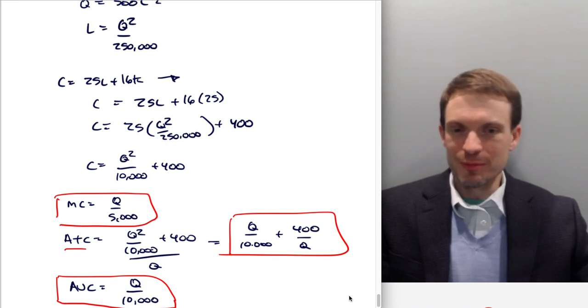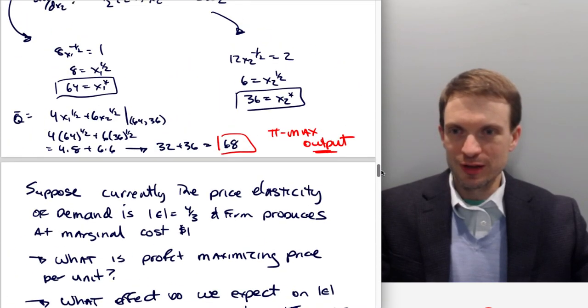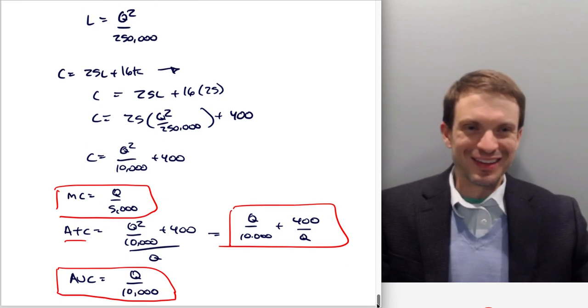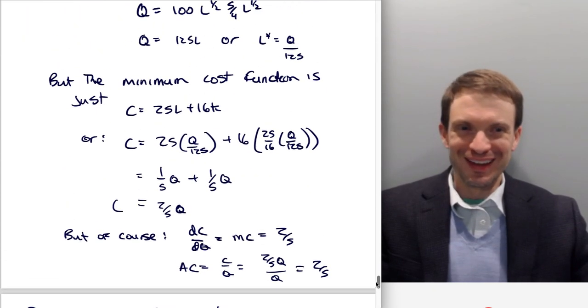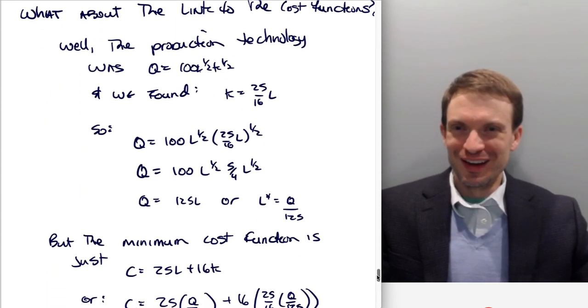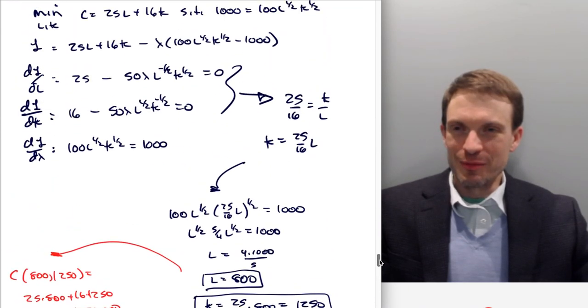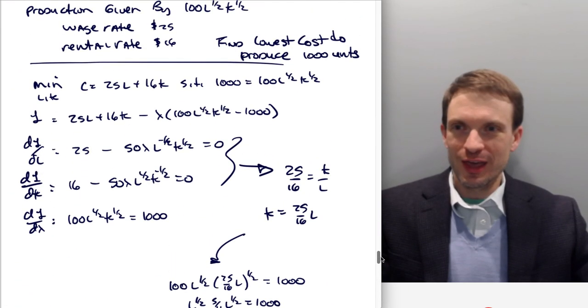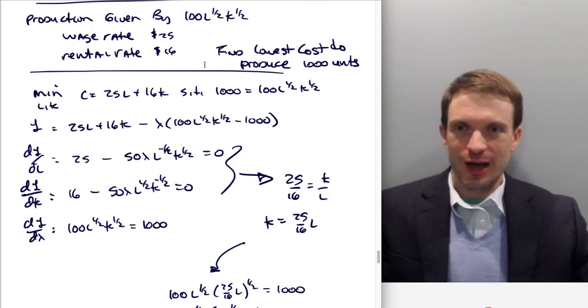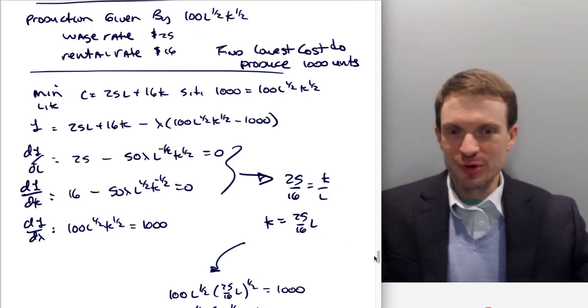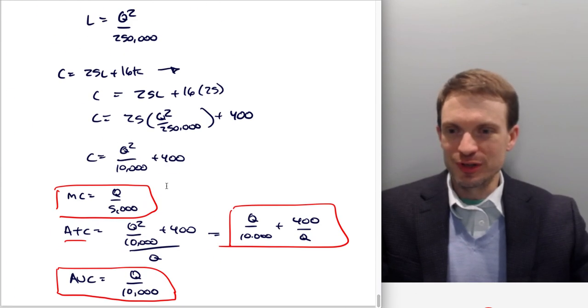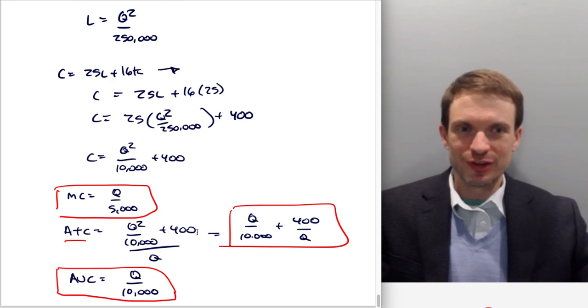Staring at that, you know what the marginal cost is. Q over 5,000, just differentiate with respect to Q. And we can get an average total cost, just divide this whole thing by Q and we get average total cost. This is going to be average fixed cost. This is going to be my average variable cost. So you can see the link. Remember where this started? You can see the link between, giving away my whole... now you see how I make these videos.